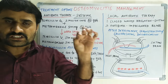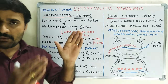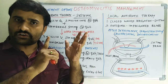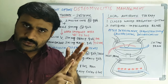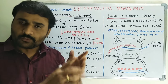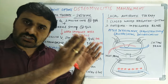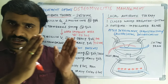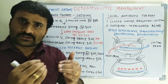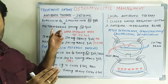In systemic therapy, the first option is penicillin. Remember the organisms involved in osteomyelitis: alpha-hemolytic streptococci, staphylococci, and anaerobes. Penicillin is most effective against streptococci and staphylococci, but it is ineffective against anaerobes. So we are adding metronidazole.